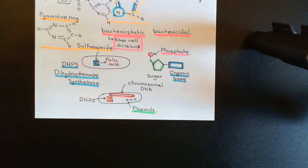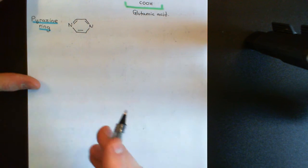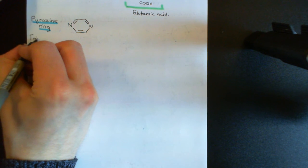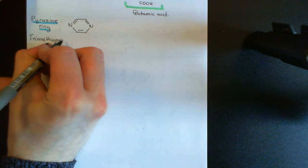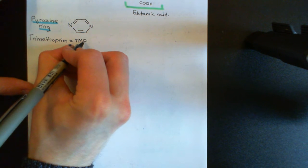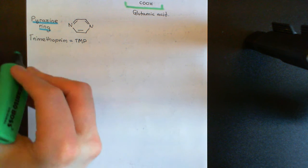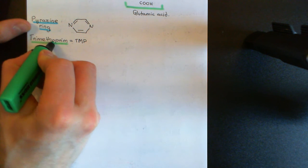Let's now move on to the mechanism by which trimethoprim — this other folate antagonist antibiotic — actually works. Trimethoprim is often abbreviated to TMP, and it's also going to work by affecting the folate pathway. However, it's going to work at a later stage than the sulfonamide. The sulfonamide worked by stopping the synthesis of folic acid by inhibiting dihydropteroate synthase within the bacterial cells. Trimethoprim is going to work to stop folic acid actually having the effect that we want it to have.